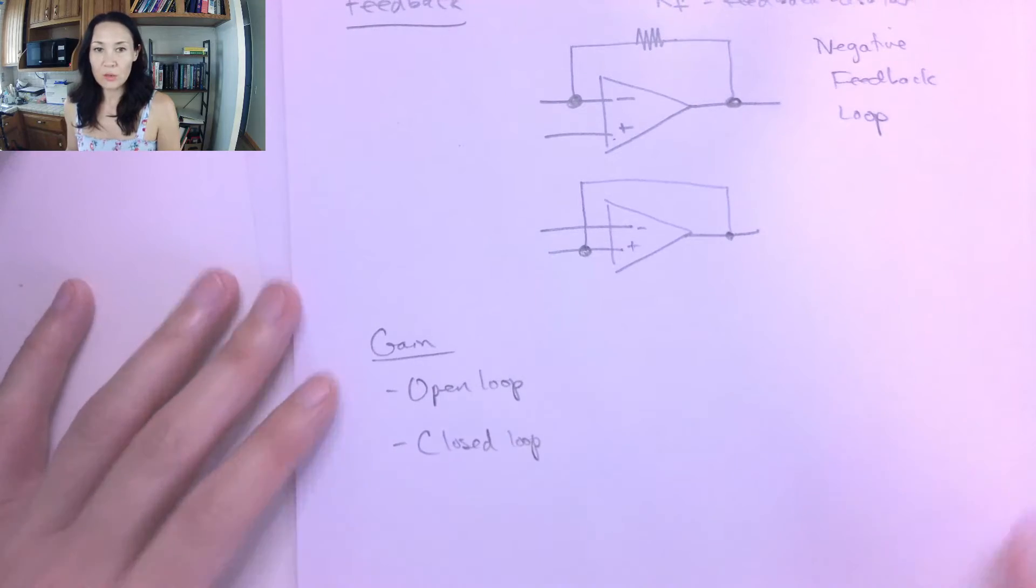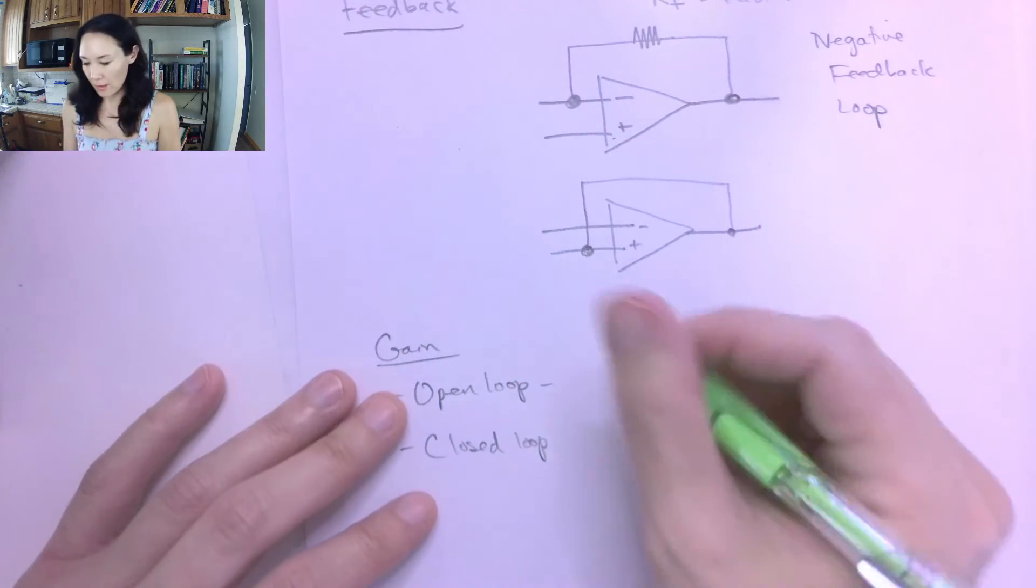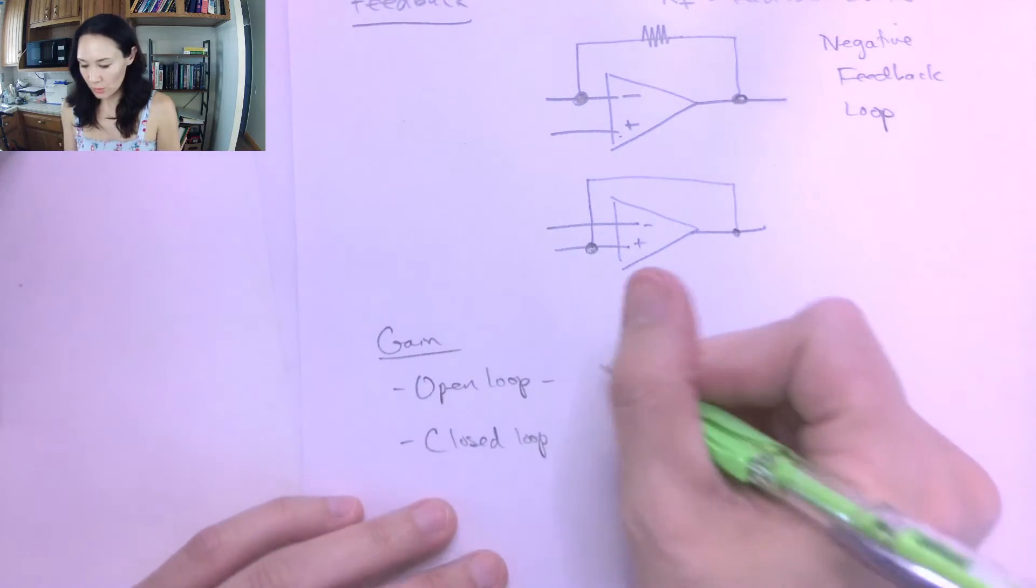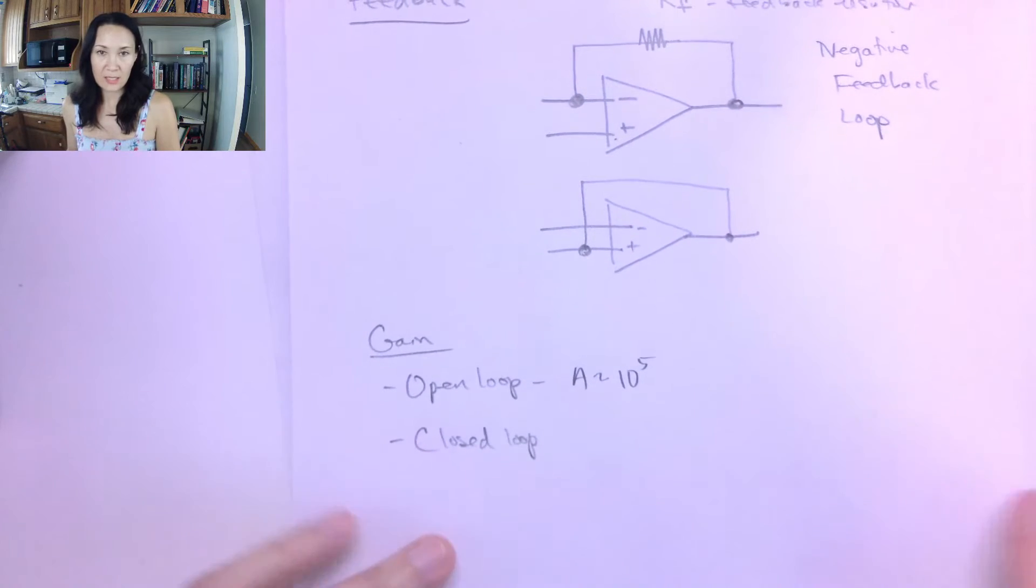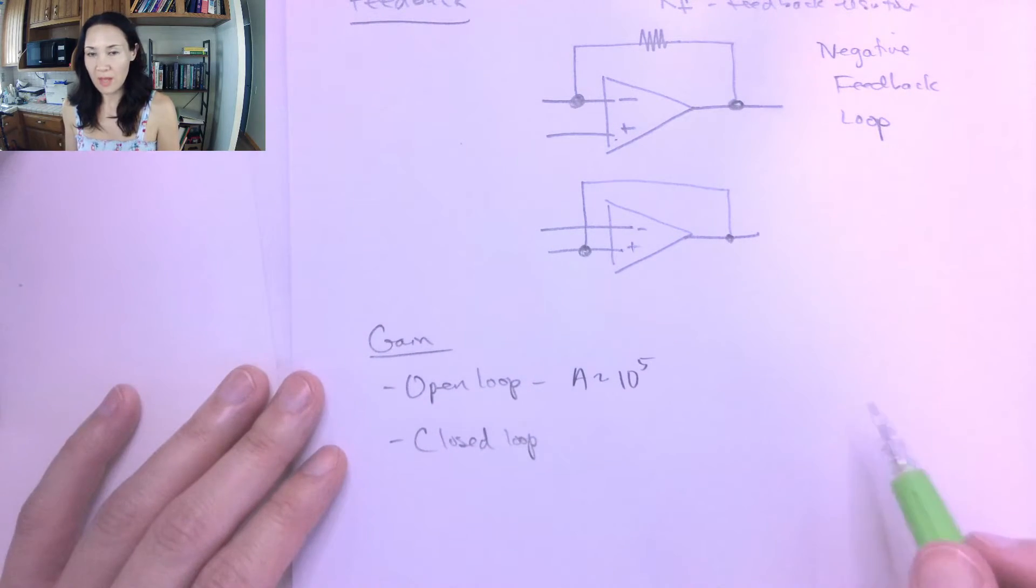So the open loop gain, remember, this is a value of A that's really, really large. So it's A about like 10 to the 5th or something like that, and it's an intrinsic value of the op amp.